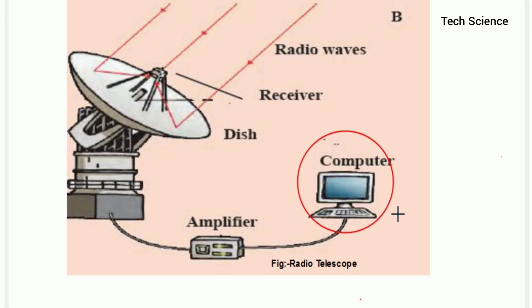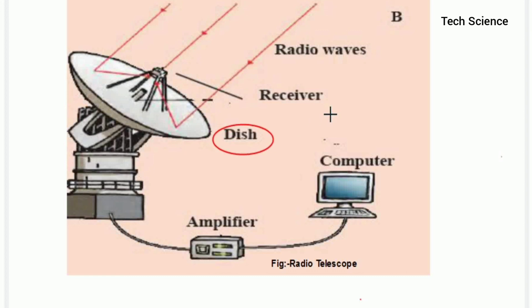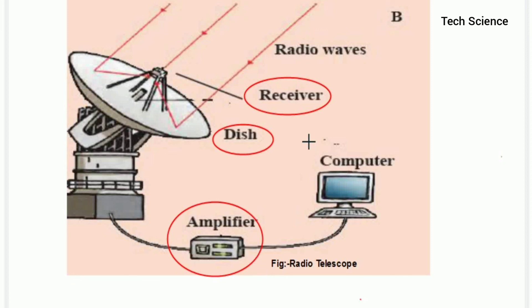So a radio telescope is a very good technology used to detect invisible waves coming from heavenly objects. The antenna, also called the dish, receives all these waves. The receiver collects them at the focus, transfers them to the amplifier for proper amplification, and feeds the signal to the computer for analysis and study. I hope you liked the video. Please subscribe to my channel and press the bell icon for new notifications. Thank you, have a nice day.